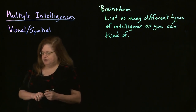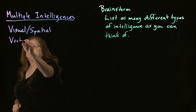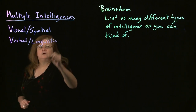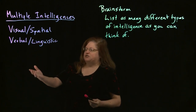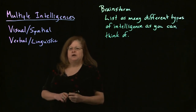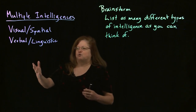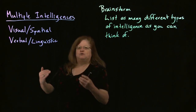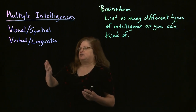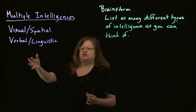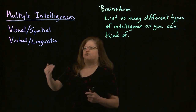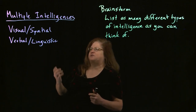Another type is verbal-linguistic intelligence. This is one of the standard types of intelligence tested by filling in bubbles. It covers how well you read, how well you write, how well you absorb things in word form — either by reading or by hearing a lecture. So if this is where your strengths are, a lot of the traditional methods of studying are going to work for you: basic reading in the book and things like that.